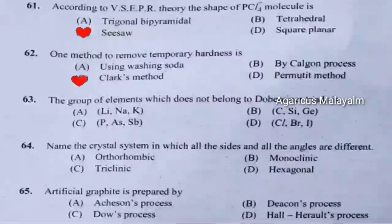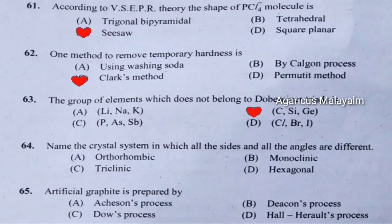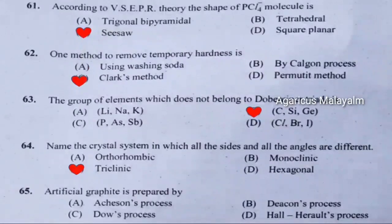Sixty-third question: The group of elements which does not belong to Dobereiner's triads is. Correct answer is option B. Sixty-fourth question: The name of the crystal system in which all the sides and all the angles are different. Correct answer is option C — triclinic. Sixty-fifth question: Artificial graphite is prepared by. Correct answer is option A — Acheson's process.